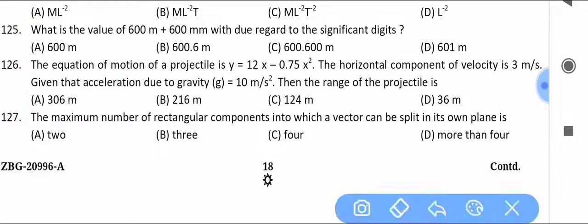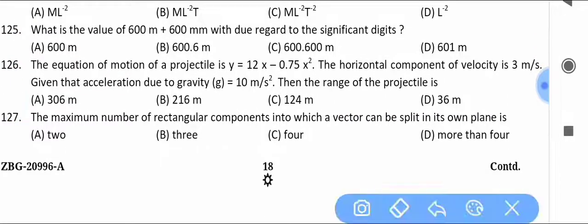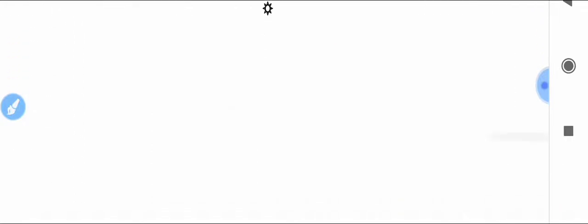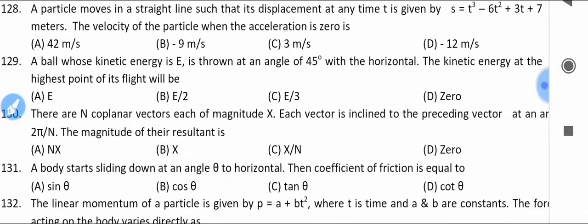Question 127: What is the maximum number of rectangular components into which a vector can be split in its own plane? Find the answer from the options.